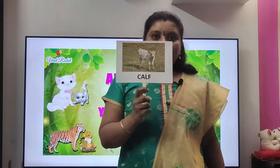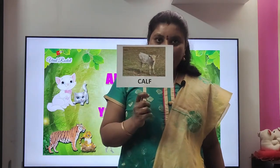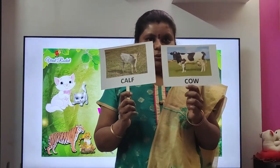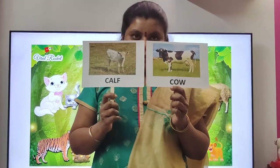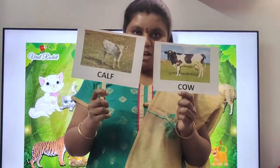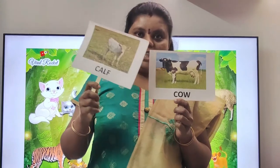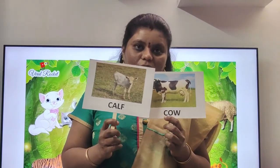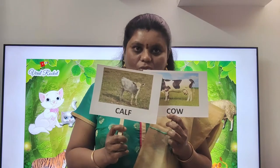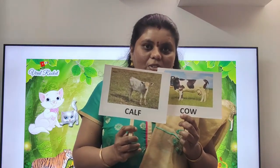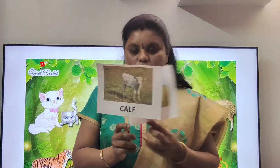This is a baby cow. Now let's see the mother of baby cow. This is cow. The baby cow is called a calf. The young one of cow is called calf. The young one is coming near mother.